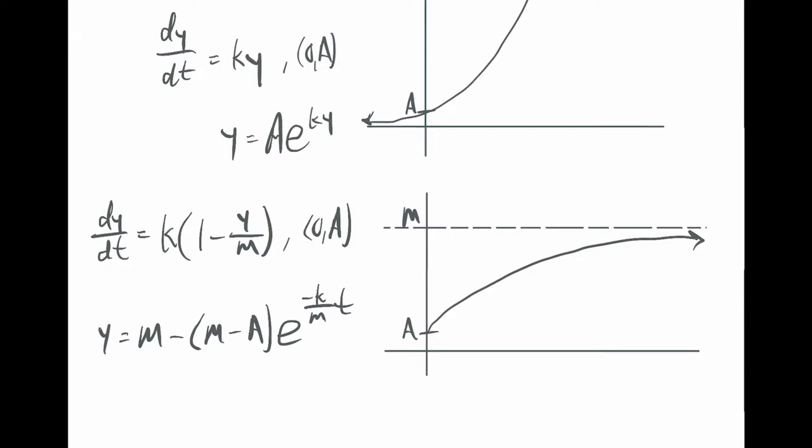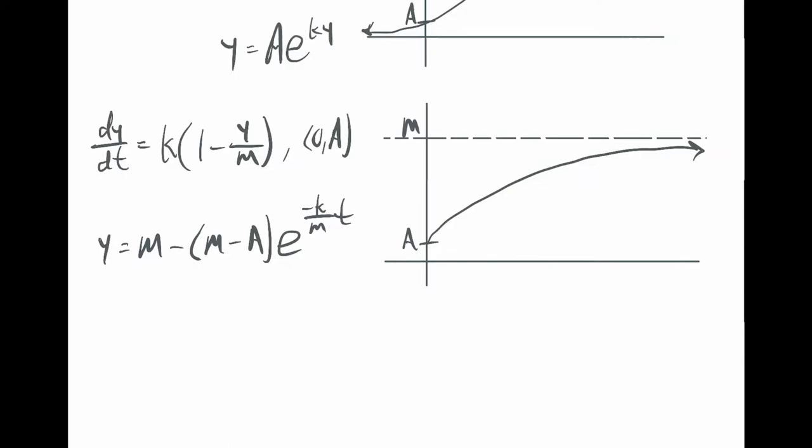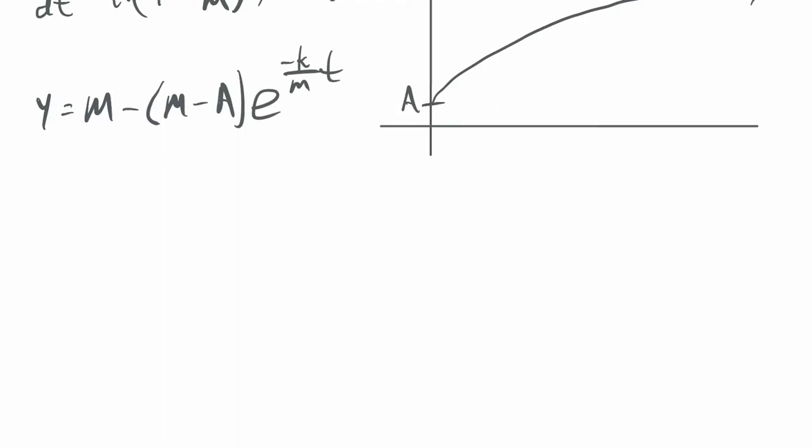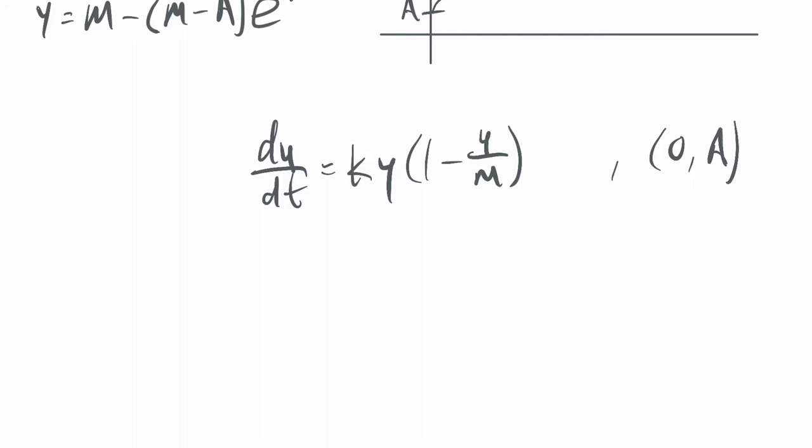So the logistic equation looks like this. dy/dt equals k times y times (1 minus y over m), some maximum value. And our initial condition is (0, a), some starting amount. So I could multiply by m on both sides because maybe I don't like having that fraction y over m. I'm going to multiply m on both sides.